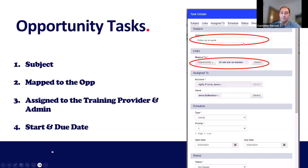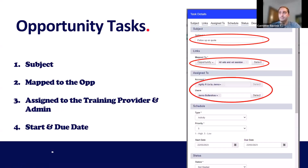Every task has to be mapped to something in the platform — a course or an opportunity, for example. You can use the select option to pick from a list of options. You then have to assign it to an account at least. Here we're using the Agility RS example, and then a user — you don't have to assign it to a user, but if you want an individual person to own that task, that's where you assign it.